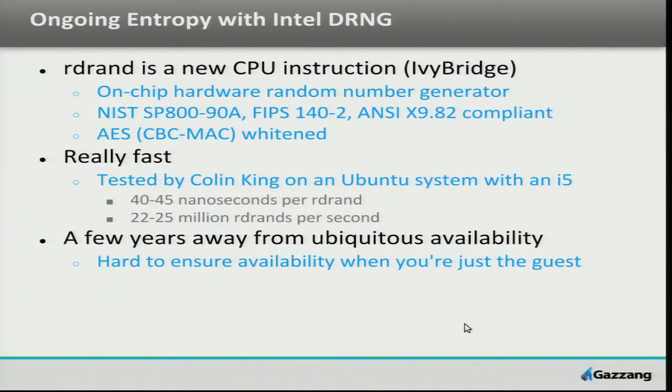I have a slide on the Intel digital random number generator coming up as well. This is a great way for ongoing entropy. This presentation is divided into two parts: one is getting a better random seed to start with, which helps your pseudo-random number generator, and over time refreshing that entropy pool. The Intel DRNG is incredibly fast — super, super fast.